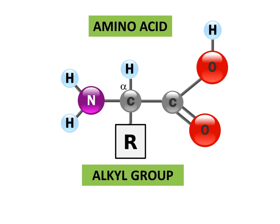The structure that results forms the basic structure of all amino acids. Since all amino acids invariably have an amino group and an acid group, hence the name amino acid. All amino acids are derivatives of methane, where one hydrogen is replaced by the amino group, another by the carboxylic group, the third hydrogen remains as it is, while the fourth is replaced by a variable alkyl group. Just by a change in this alkyl group, the name, structure, function, and property of an amino acid may change.